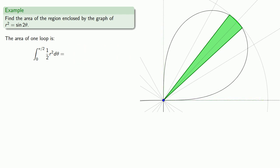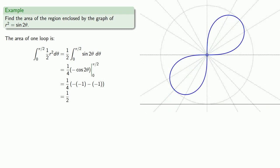Since our differential variable is theta, that is the only allowable variable. So we'll need to replace this r with some function of theta. Fortunately, we know that r squared equals sine of 2θ, so we can make that substitution. And now we can evaluate our integral. So remember, this is just the area of one loop. Since there are two loops, the area is 2 times 1/2, or 1.